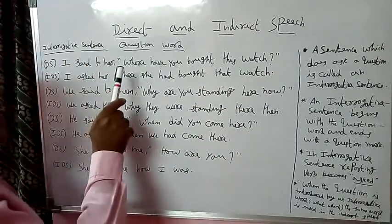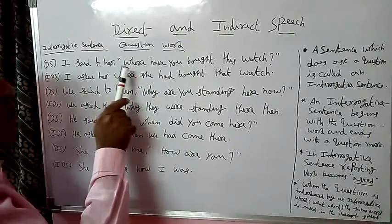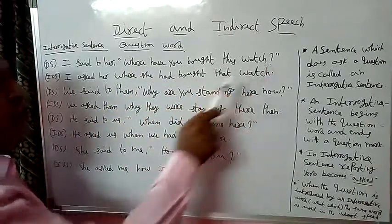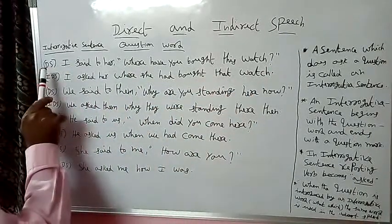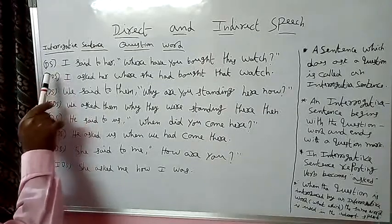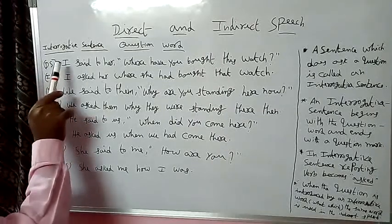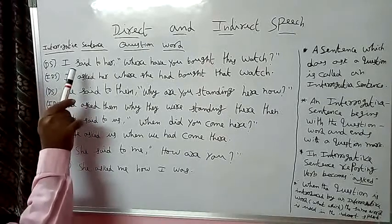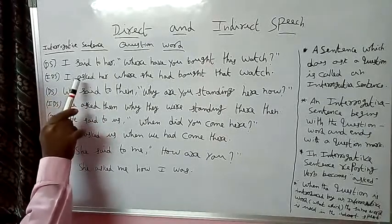An interrogative sentence begins with the question word and ends with a question mark. Here in direct speech the subject is I. In indirect speech we must write the same subject I. The reporting verb 'said to' becomes 'asked'.